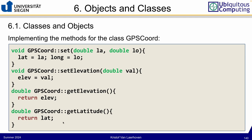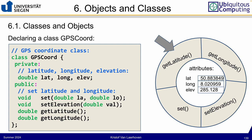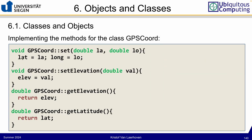Other than that, methods work just like functions — they can have any number of parameters with types and names, and inside them you can access the private attributes. Lat, long, and elev are doubles that are private. In the set method we can assign them new values; in get methods we return those values. The method for getting latitude, getting longitude, and setting elevation all follow this same pattern.